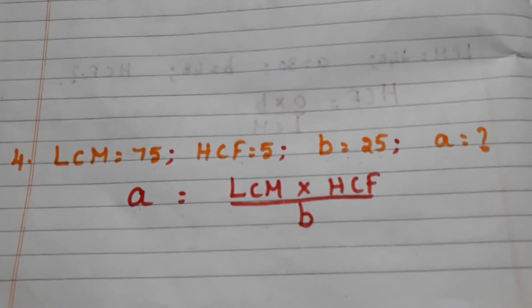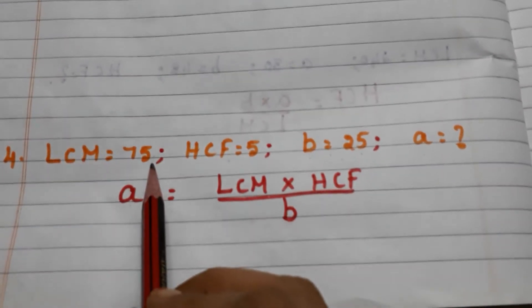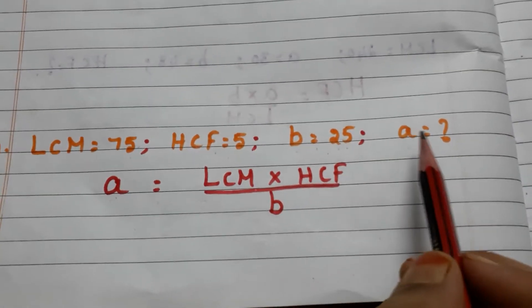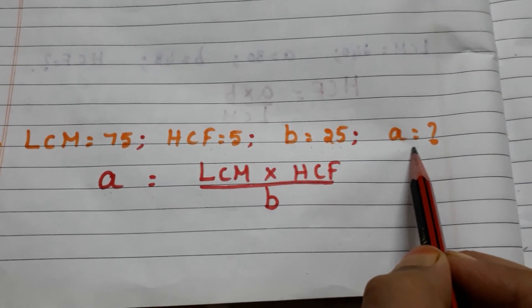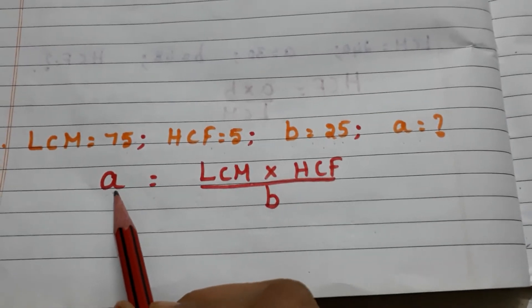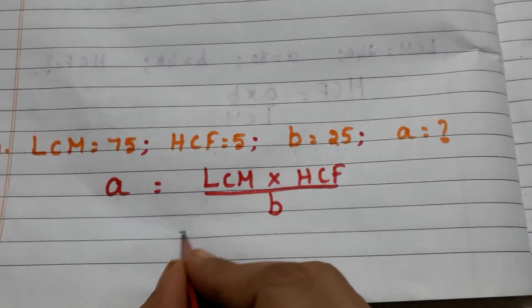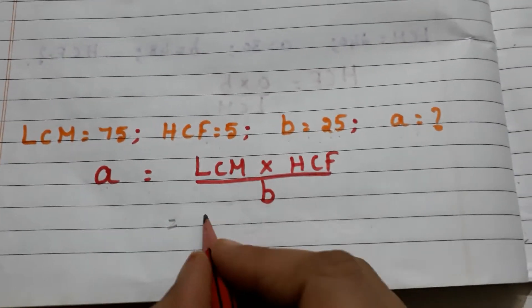Let us go to case 4. Here we have LCM equals 75, HCF equals 5, and second number b equals 25, and we have to find the first number a. Then the formula becomes a equals LCM into HCF by b. Apply the values. LCM equals 75.